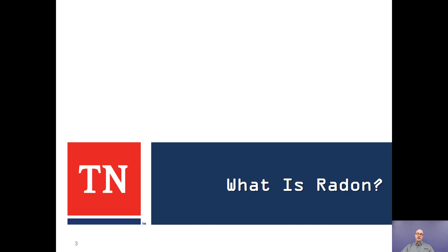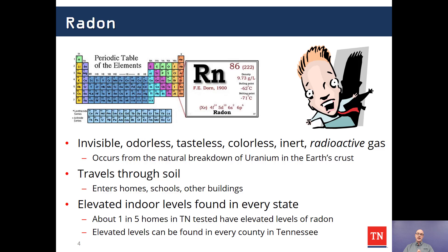We will begin with a brief overview of what radon is. Radon is one of the so-called inert gases, which comprise the far right-hand column of the periodic table of elements shown here on the upper left. The inert gases all share the same basic physical characteristics: they are non-chemically reactive, which means they are invisible, odorless, and tasteless — providing us with zero cues to their presence in the environment.